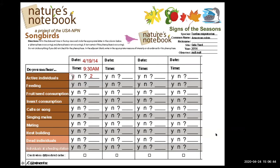We went over last time how to make observations, and this is a completed data sheet. Basically you put the date and time and look at whether you saw or heard different phases called phenophases — different stages of development of these different species. This one happens to be American Robin. We fill out a data sheet and then look at how to put that on the website.